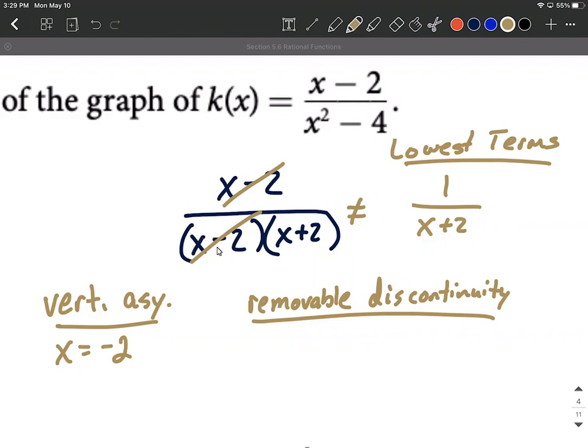So remember, if you plugged in a positive 2 in for this factor, it would have made the denominator be zero. So it's still not in the domain. We're not allowed to get a point on our graph at x equals 2. Instead, it's going to be this removable discontinuity, or sometimes we call this a hole in the graph for not being quite as precise.